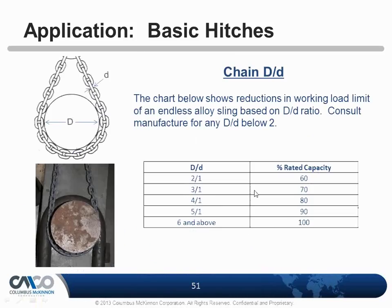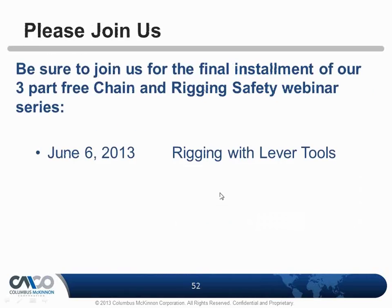Chain also has a D-to-D ratio requirement, but only 6-to-1. So if you're looping chain through a shackle, the diameter of the shackle must be at least six times larger than the chain diameter to avoid damage. D-to-D charts are published in ASME standards and on CM's blog site.